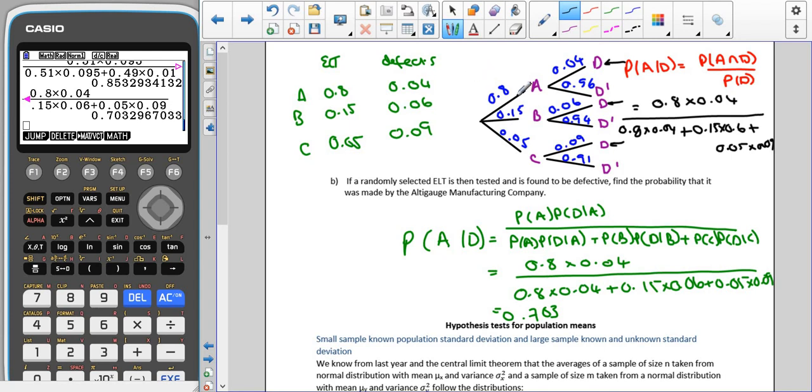So if you forget Bayes theorem you can go back to using this, you will end up with the same thing but it just takes a little bit of extra time and if you're limited on the number of marks that you're getting for the question and the amount of time that you have in the exam it's a good idea to learn what Bayes theorem is and how to use it rather than having to draw out your probability tree then figure out it's going to be the probability of A and D over the probability of D and then remembering to include all the ways that it can be defective. Thank you very much for listening.